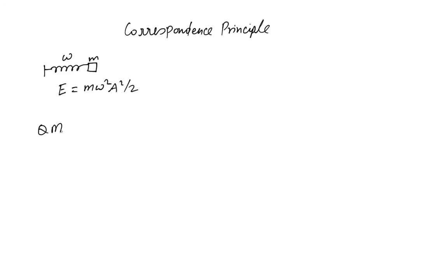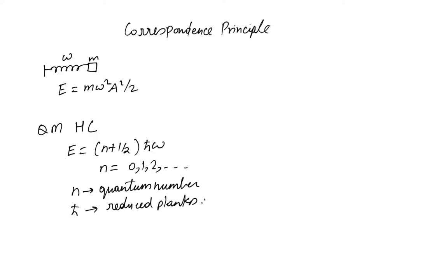But if we talk about quantum mechanical harmonic oscillator, which we'll talk about later in detail, the energy is given as H bar omega times (N plus 1/2), where N is called the quantum number and H bar is the reduced Planck's constant. This is angular frequency.